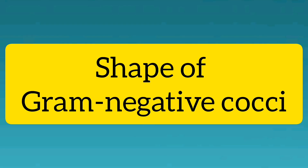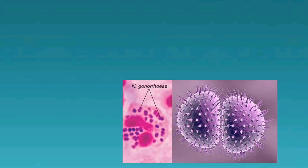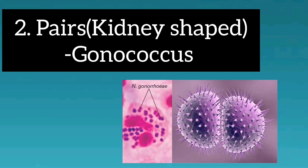Shape of Gram negative cocci. Neisseria looks like lens shaped. Gonococcus looks like kidney shaped.